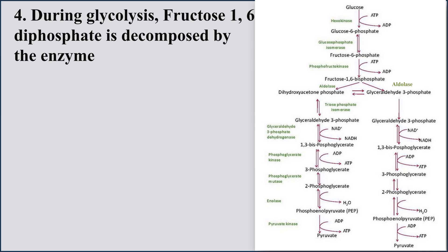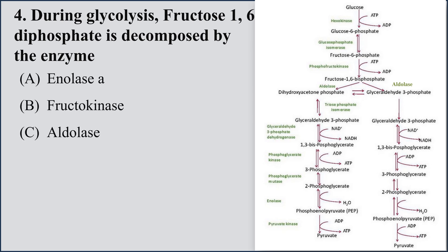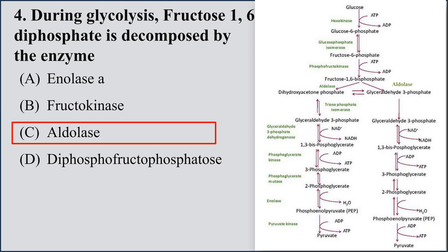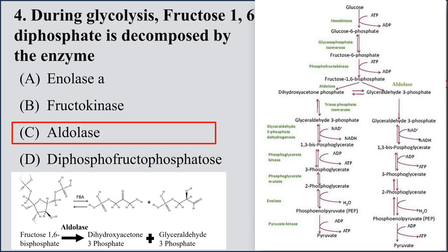Question number 4: During glycolysis, fructose 1,6-diphosphate is decomposed by enzyme: A) enolase, B) fructokinase, C) aldolase, D) diphosphofructophosphatase. The right option is aldolase. Aldolase is the enzyme that catalyzes the conversion of fructose 1,6-diphosphate into dihydroxyacetone phosphate and glyceraldehyde-3-phosphate.